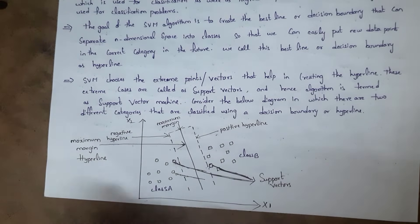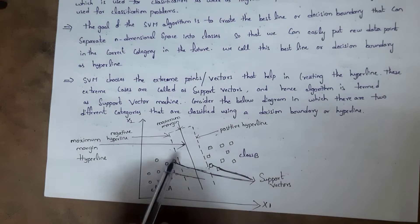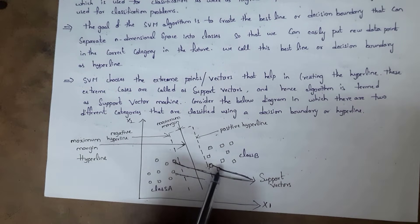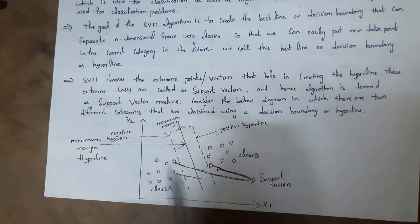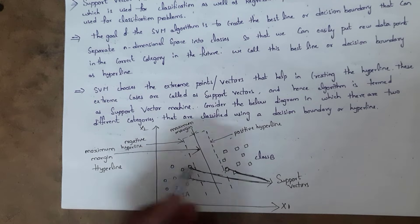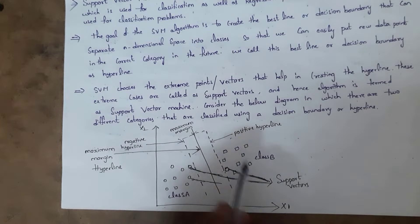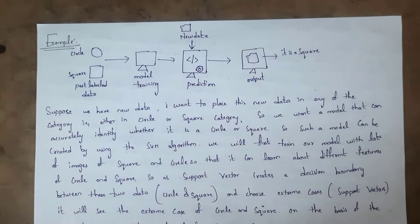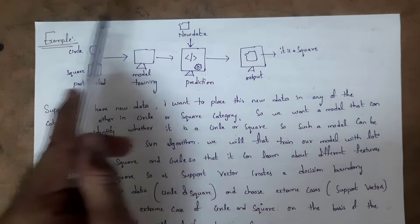We call both the circle and the square support vectors because they are close to each other, and based on this we created the hyperplane that divides the data into two classes. Since dividing the data is based on the support vectors, we call this algorithm the Support Vector Machine.